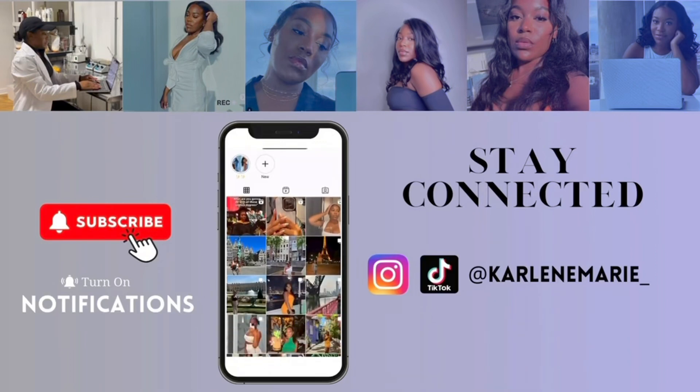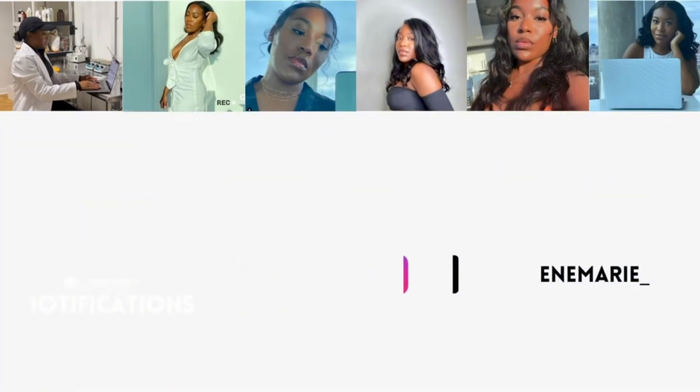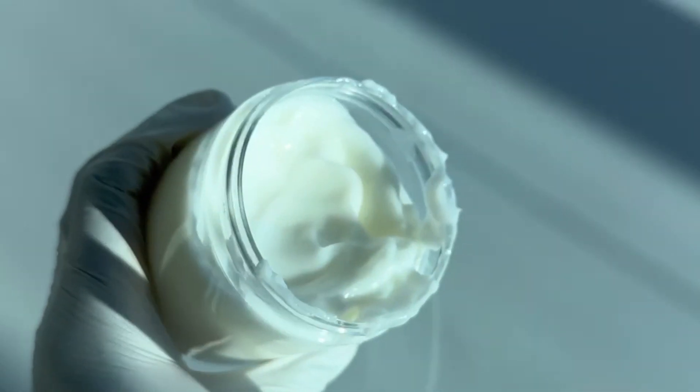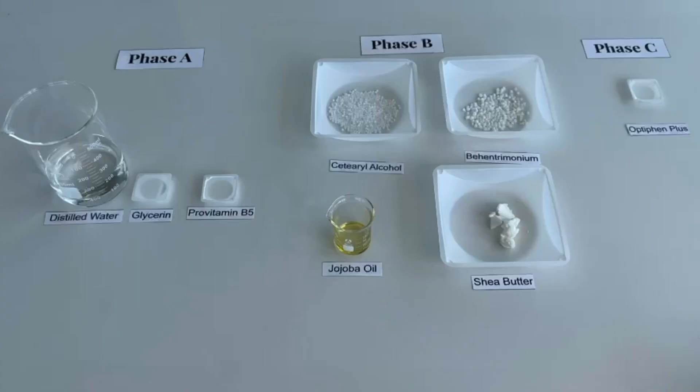Today I will be showing how a basic conditioner is made. When making cosmetic products, I like to use three phases of ingredients: Phase A, Phase B, and Phase C. Phase A is my water phase—anything that is water soluble goes into this phase. Phase B is my oil phase, so anything that is soluble in oil will go into this phase.